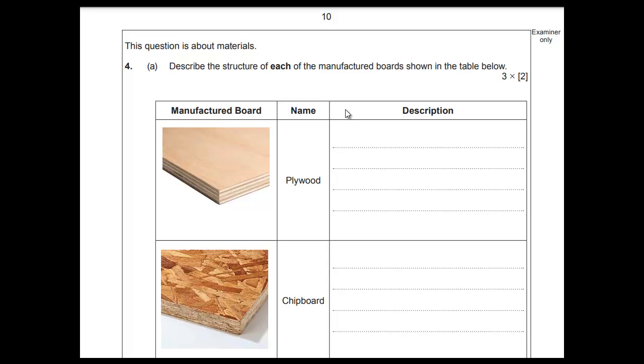The question is number four: describe the structure of each manufactured board shown in the table below. Let's break that question down to see what it's actually asking us to do. The word describe means you need to tell about its characteristics. The structure is really speaking to you, telling you how it's constructed, basically why it's constructed that way.